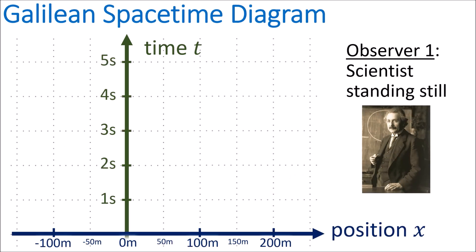Let's look at our first example of motion in a spacetime diagram. Observer number one is a scientist who is standing still. The scientist starts at the origin at a position of zero meters. If he stands still, one second later he'll still be at a position of zero meters, and he'll continue to stay at the same position at two seconds, three seconds, four seconds, and so on.